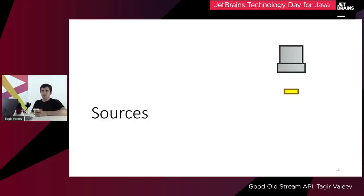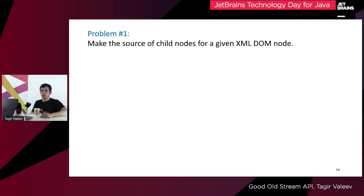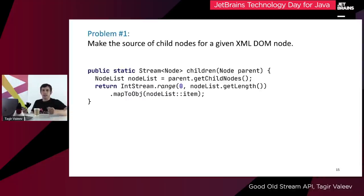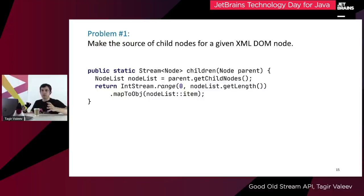Let's start with sources — these are the easiest things you can make by yourself. In some cases, creating a new source is really simple. We can take an existing source, perform some intermediate operations, and call the result a new source. For example, assume you have a DOM API and want to get all the child nodes for a given parent. We query the node list, then create a stream of indices starting from zero up to the length, and finally map the indices to the items using the item method. We can put this method into a utility class like XmlStreams and use it from there.